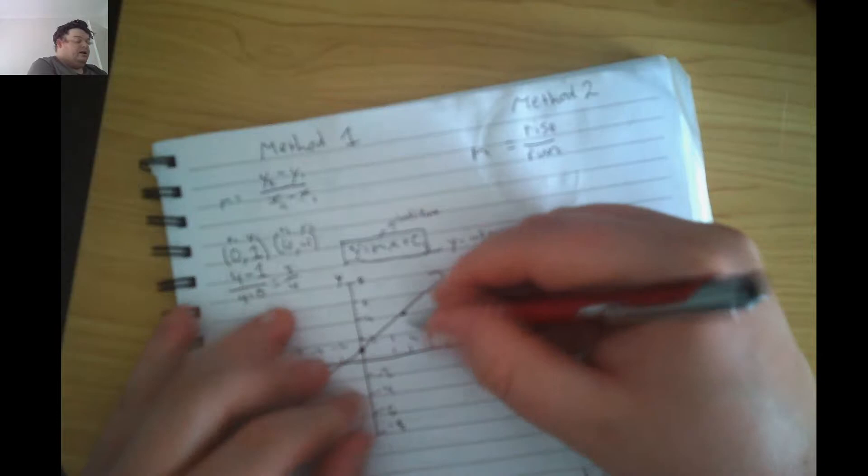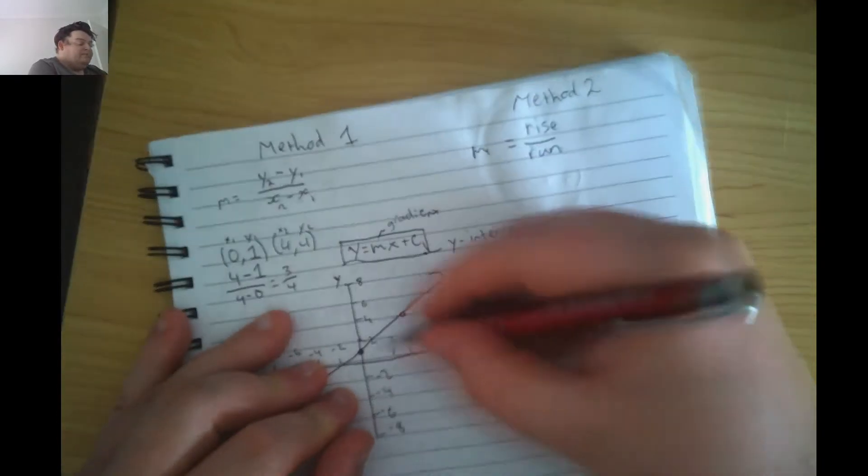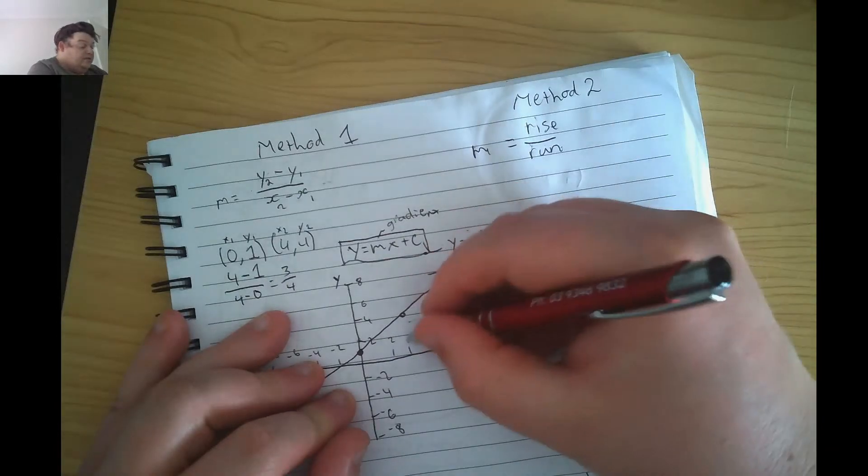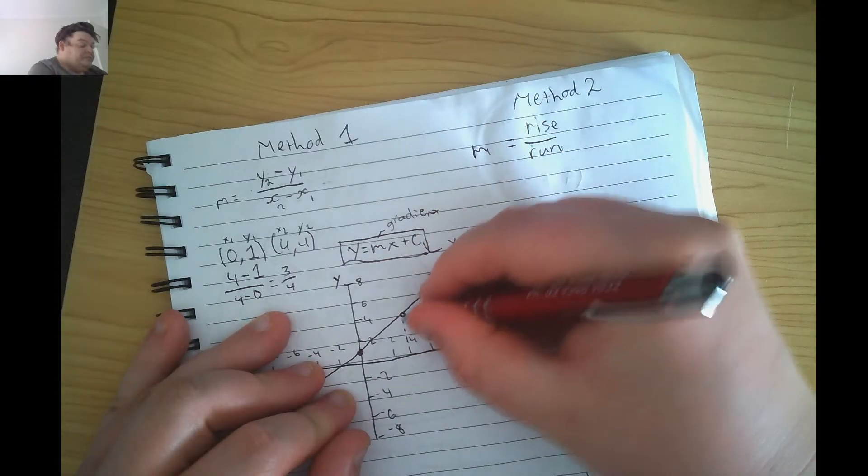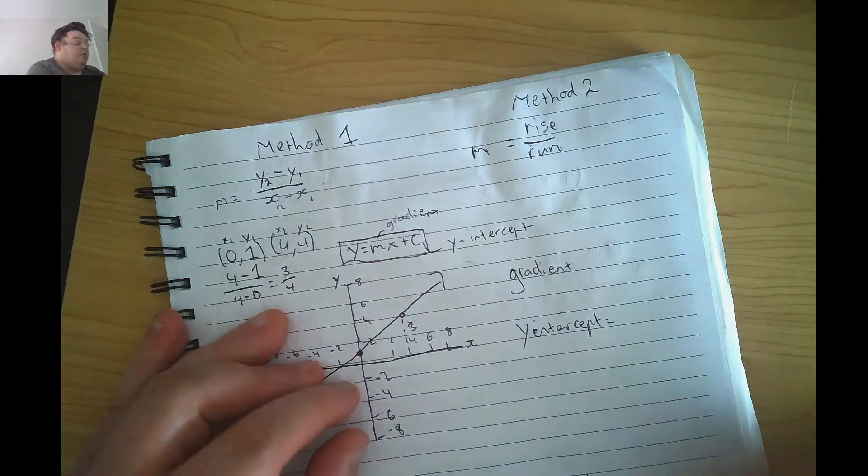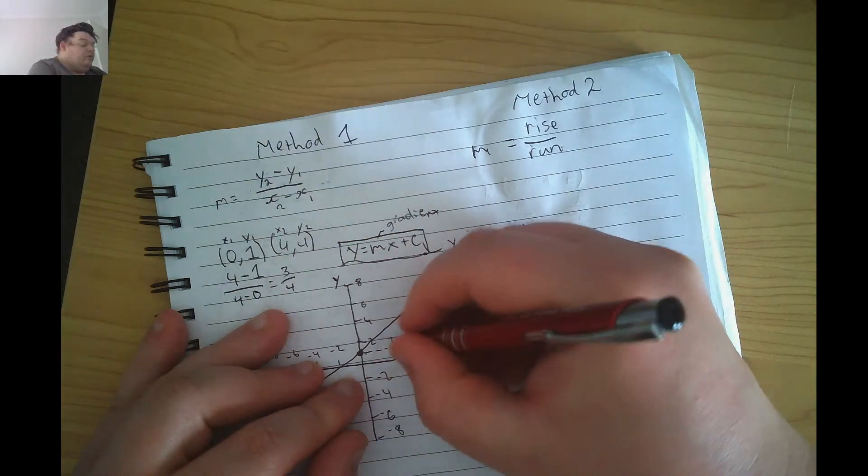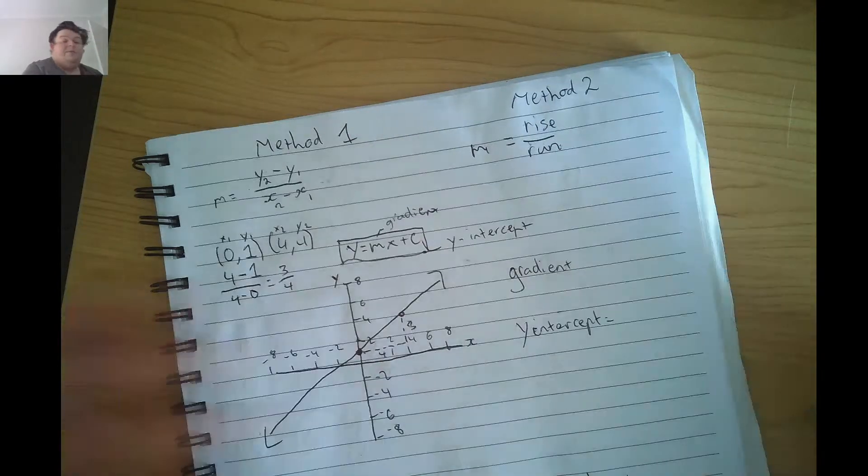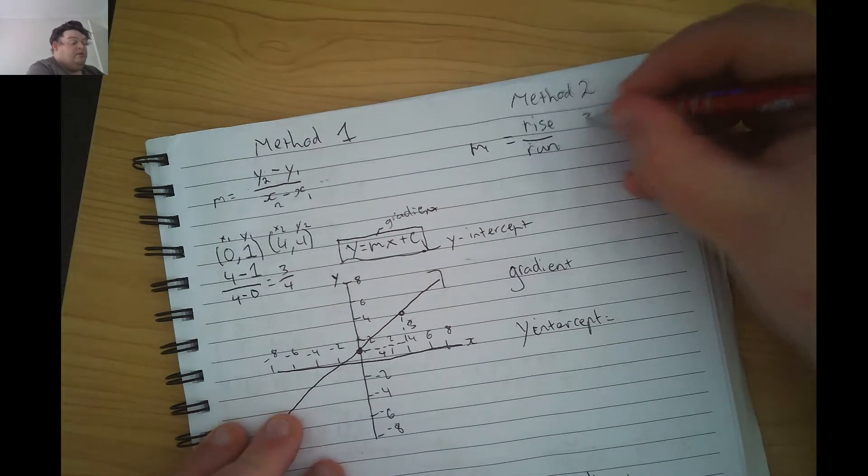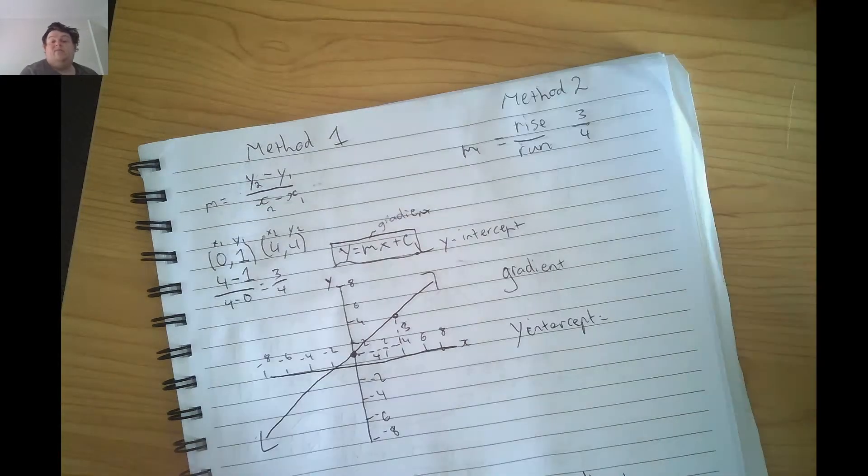So between these two points, it's gone up from 1 to 4, which means it's gone up 3. It's gone across from 0 to 4, which means the run is 4. The rise, 3, divided by the run, 4. See, we get the same gradient.